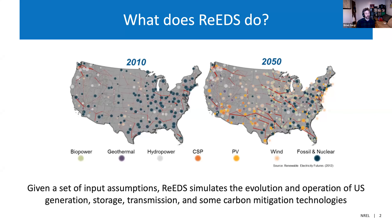At a high level, ReEDS is a model that simulates the evolution and operation of the US power sector. It looks at how different generation, storage, transmission technologies, and even some carbon mitigation options might be deployed in the power sector over time given a certain set of assumptions around policy, cost characteristics, or performance of those technologies. It's a tool meant to study how the power sector might change over time given different conditions — for example, given some sort of decarbonization target, what set of technologies might we build and where to ensure the power system is reliable and meets those targets.